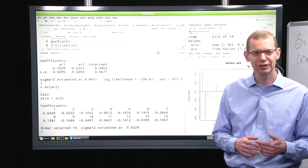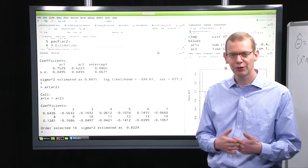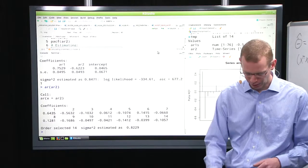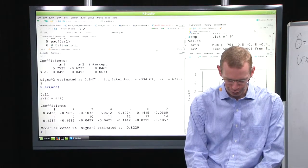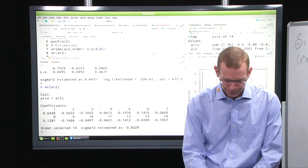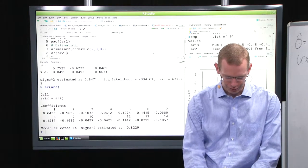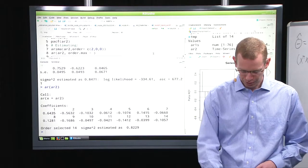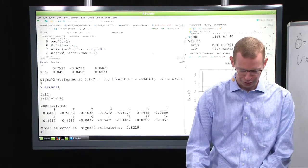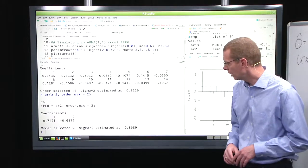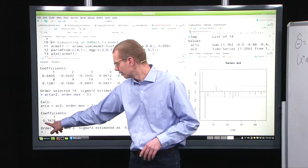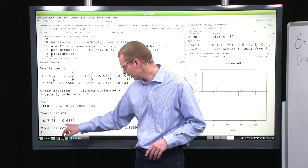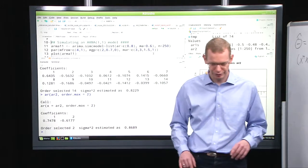So what I will just do now is that I will force it to not use such a large model. You can say what is the maximum order, and I will just use 2 to make sure that I get something that I can use.